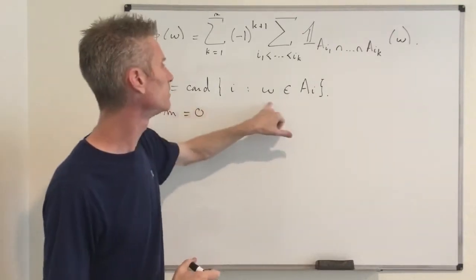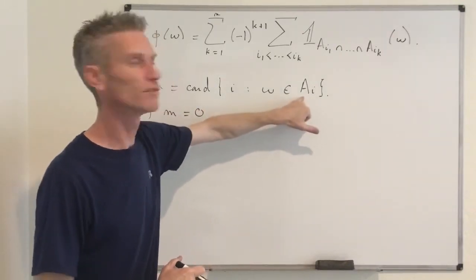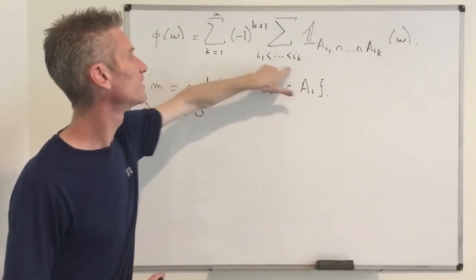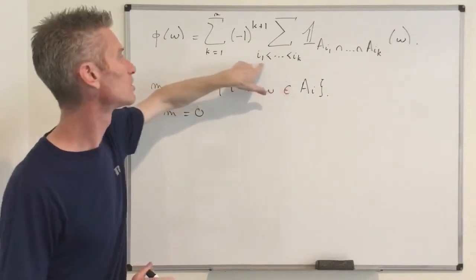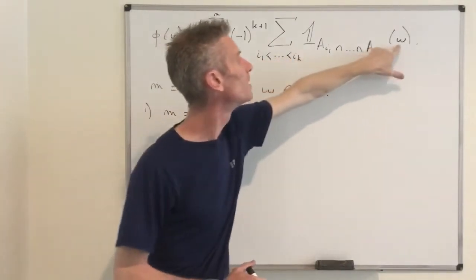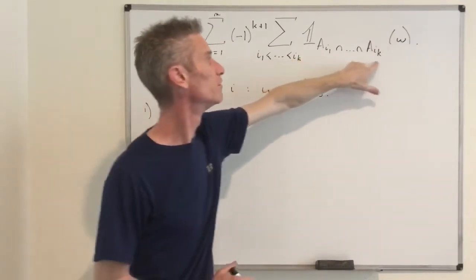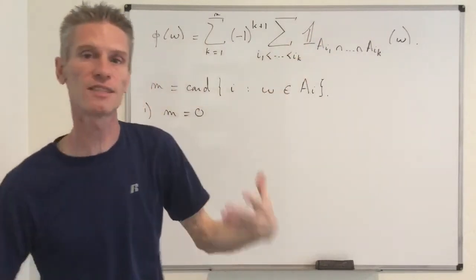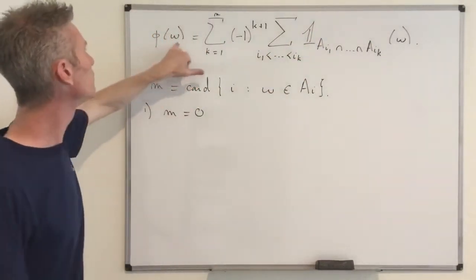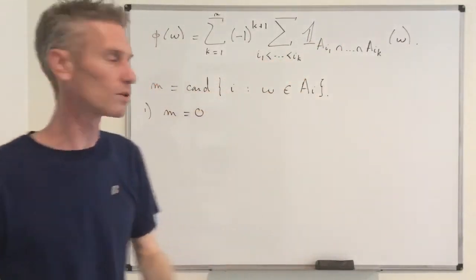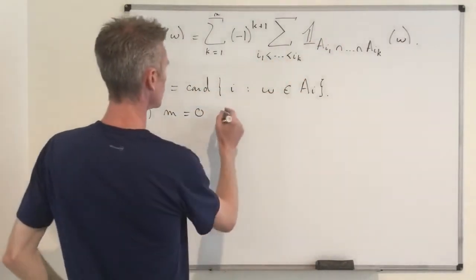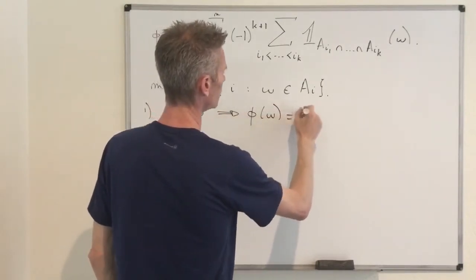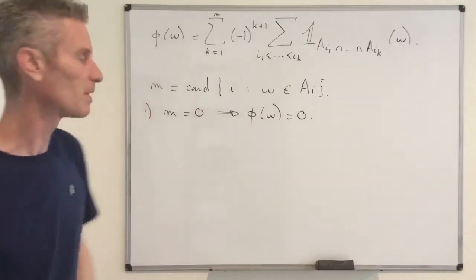The first case, m = 0, is easy. If ω belongs to none of those events, then no matter what choice of indices we pick, ω is never in their intersection — even if we take just one event. So all those indicator functions equal zero, and φ(ω) is just a sum of zeros, which equals zero. So m = 0 implies φ(ω) = 0.